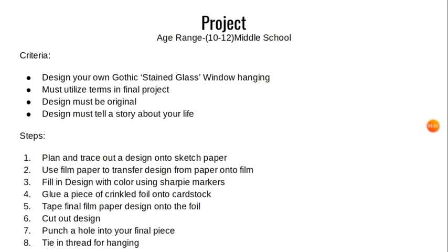The steps for this project are: first, plan and trace out a design onto sketch paper. Then use transparency film to transfer the design from paper onto the film. Then fill in the design with color using Sharpie markers. Then glue a piece of crinkled foil onto the card stock. Then tape the final film paper design onto that foil piece glued to the card stock — it could be either glued or taped. Then cut out the design and punch a hole into the final piece, and tie in a thread hanging.